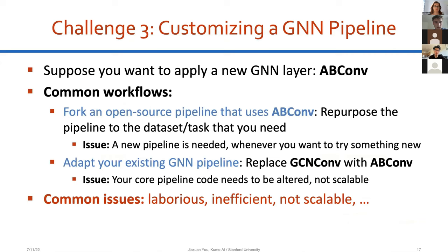A third challenge is customizing a GNN pipeline. Suppose you want to define a new GNN layer called AB-conv. The typical workflow is either to fork an open-source pipeline and repurpose it for your dataset — requiring the whole pipeline process to be redone every time — or to adapt an existing pipeline by replacing GCN-conv with your new AB-conv, which requires editing the core pipeline code. Either way, customization involves significant redundancy and inefficiency.